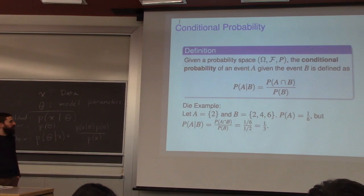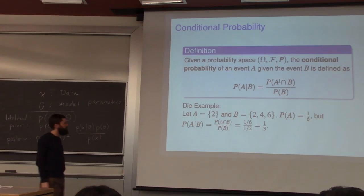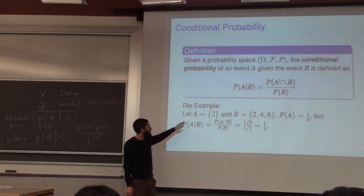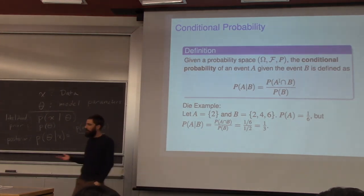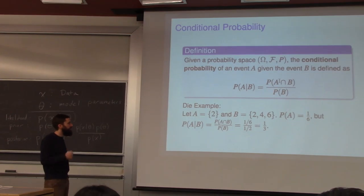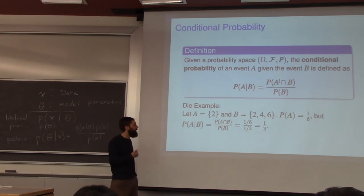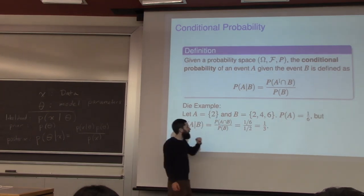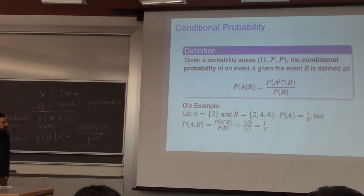Once you define a probability measure, you can define the conditional probability of one event A given another event B — defined as the probability of their intersection divided by the probability that B happens. That's the conditional probability of A given B. A simple example is the die example: the event A is rolling a two, event B is rolling an even number. The probability of rolling a two is one-sixth, but if I tell you an even number was rolled, the probability it's a two is now one-third — which you get from the formula: (1/6) divided by (1/2) equals one-third.